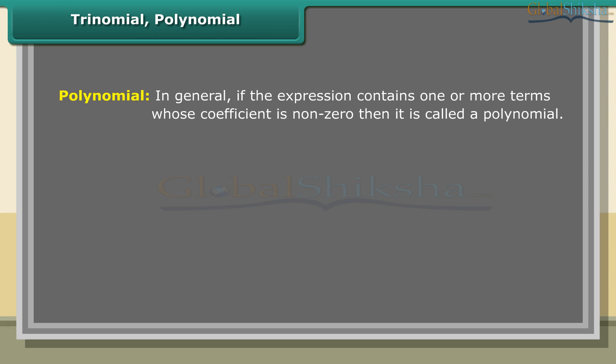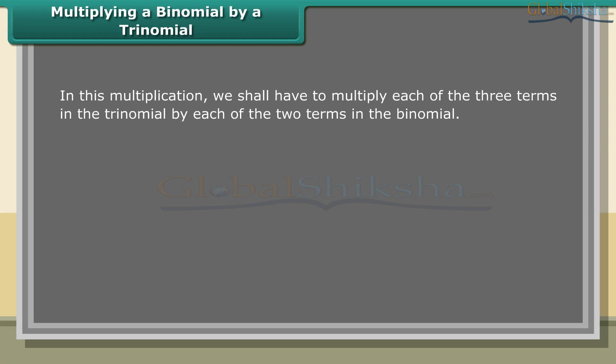In general, if an expression contains one or more terms whose coefficient is non-zero, then it is called a polynomial. Example: 4x + 4xy + 17xz² − 10y²z + 19.